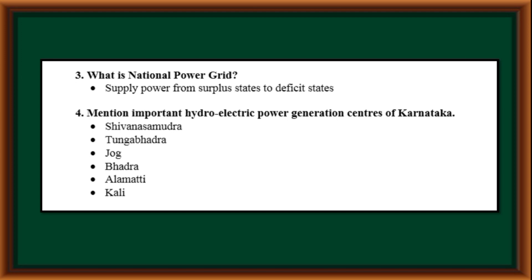What is a national power grid? Supply of power from surplus states to deficit states is called a national power grid. Mention important hydroelectric power generation centers of Karnataka: Shivasamudra, Tungabhadra, Jog, Bhadra, Alamatti, and Kali.